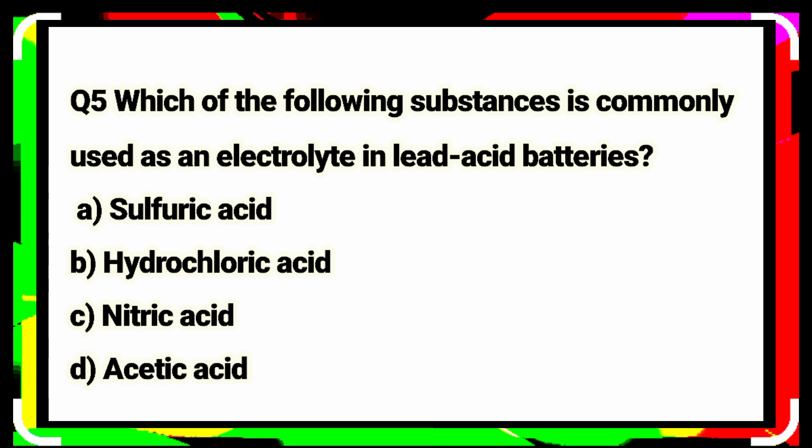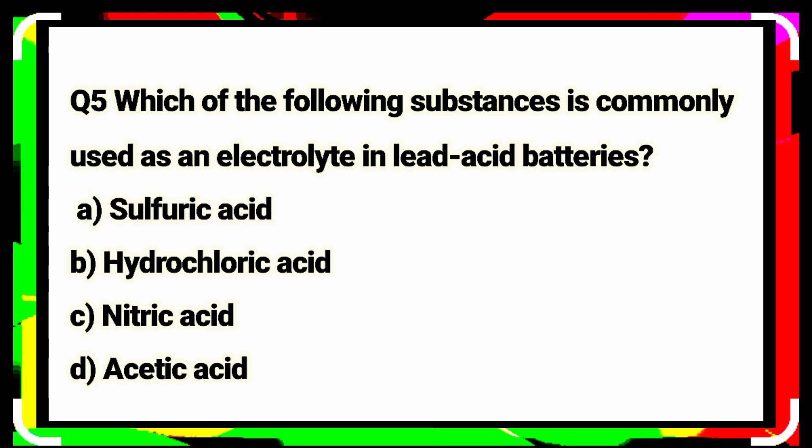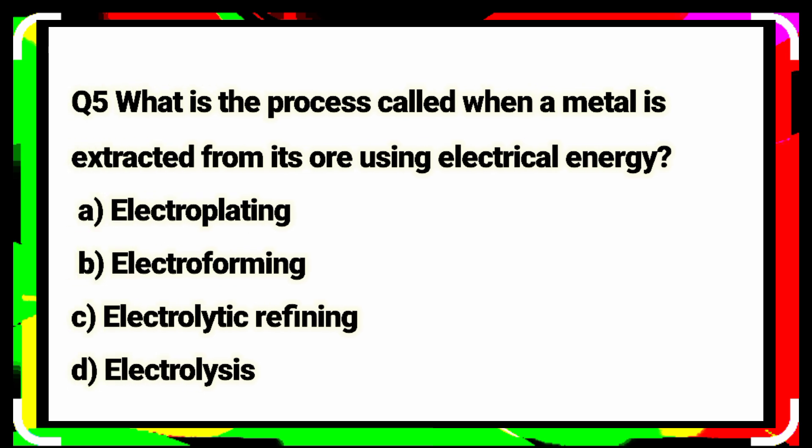Question number five: which of the following substance is commonly used as an electrolyte in lead-acid batteries? Sulfuric acid. Option A is the correct answer. Question number six: what is the process called when a metal is extracted from its ore using electrical energy? Electrorefining. Option C is the correct answer.